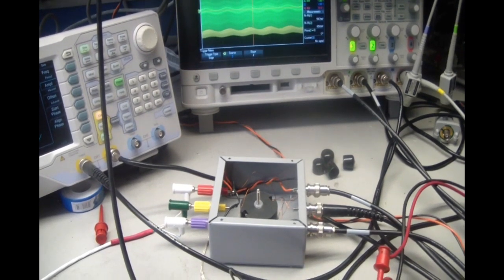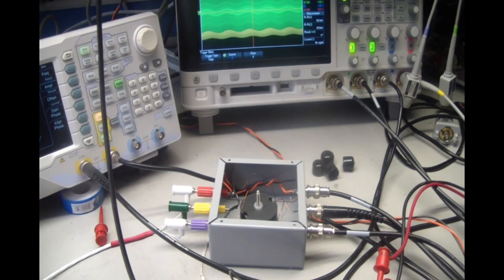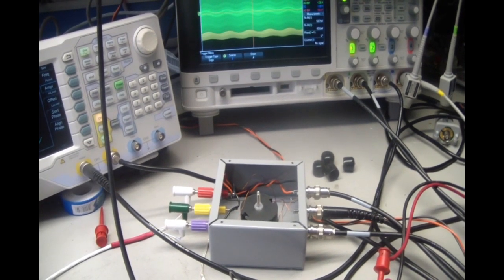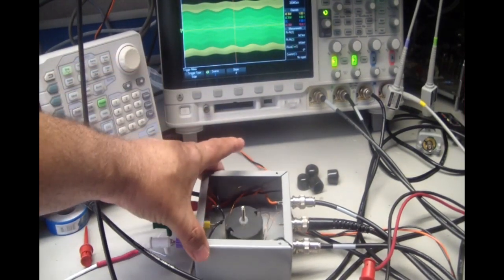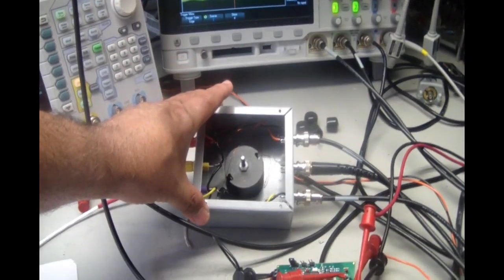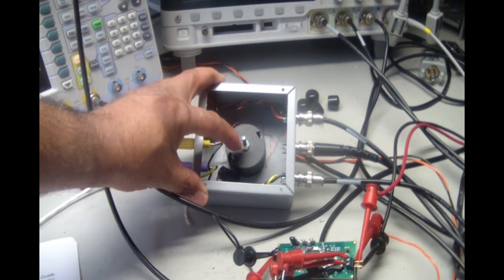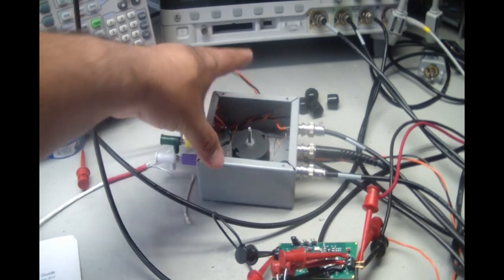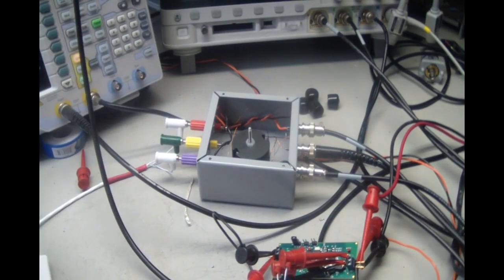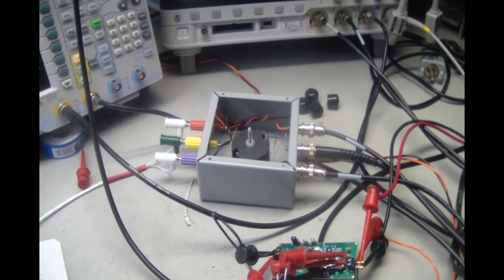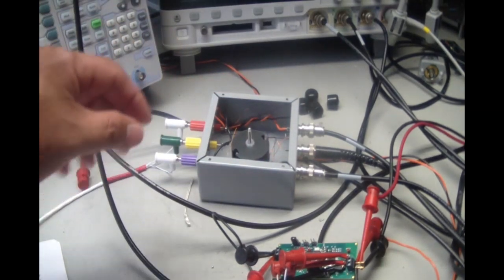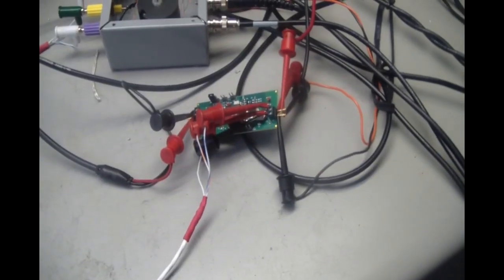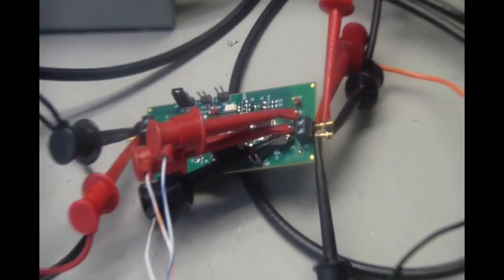The one that I'm using here is the Rigol DG4062 and you can also use the oscilloscope. The oscilloscope that I'm using is the Agilent DSO3024A. And also, you would need to construct an injection transformer. In this case, I'm using this little box as my injection box. In here, I have a transformer.